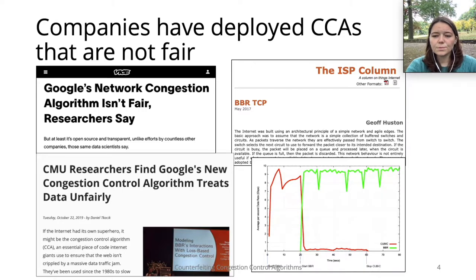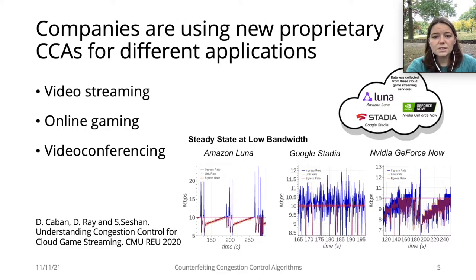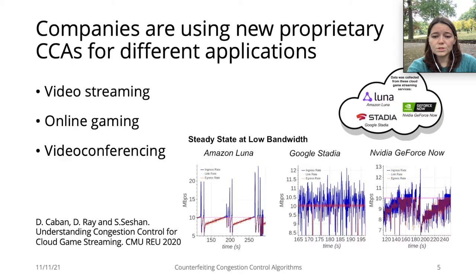Researchers were able to perform this kind of analysis because Google's CCA is open source. However, with new applications, a lot of new algorithms are being used on the Internet, and some of these algorithms are proprietary, which prevents us from performing the same kind of in-depth analysis we can perform on open source CCAs.